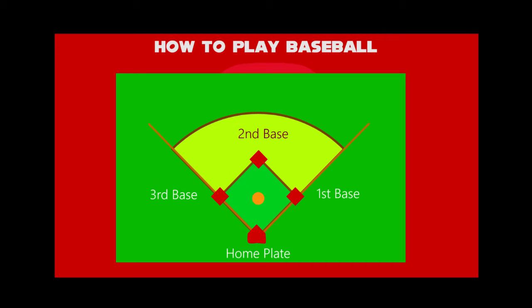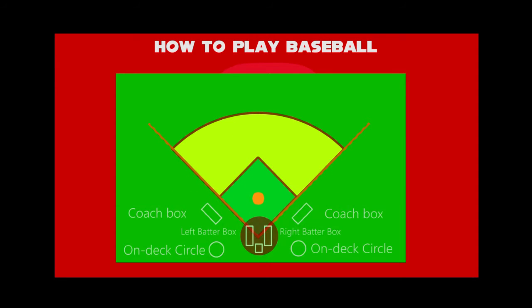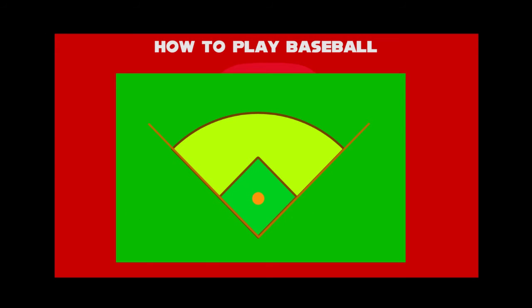which determine first run, second run, third run, and home run. On both sides outside the square area, defensive players have a coach box, batter box, and on-deck circle. Next to the square area is an infield,